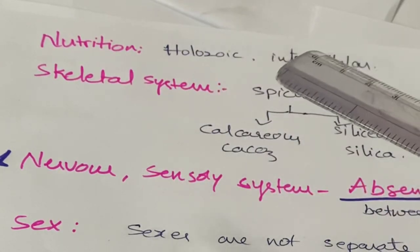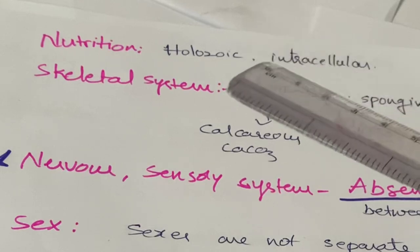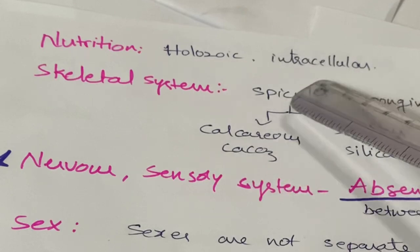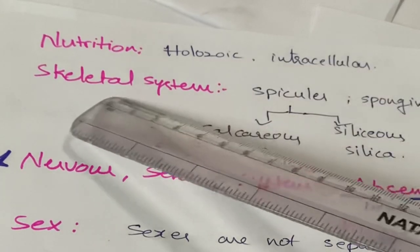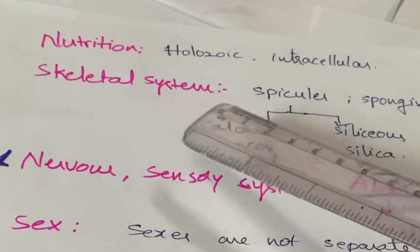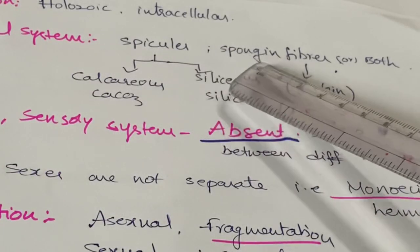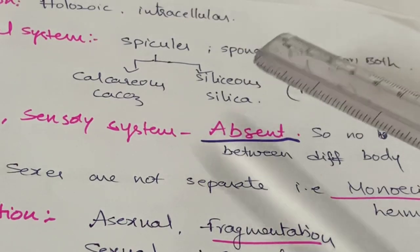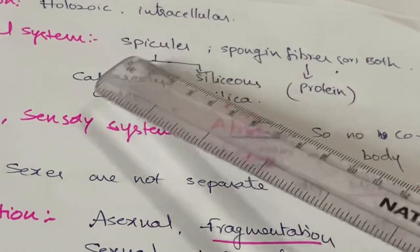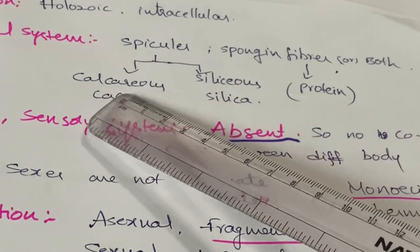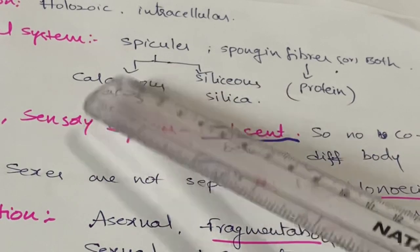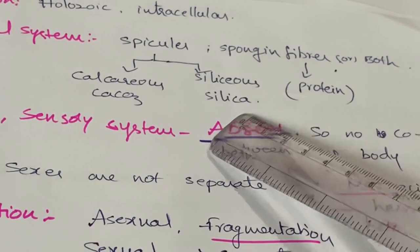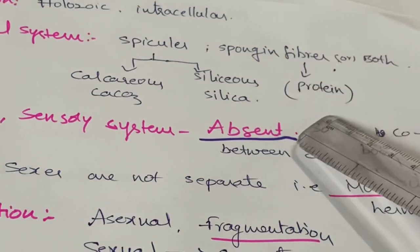The type of nutrition in Porifera is holozoic and intracellular nutrition — food is taken inside the body without modification and digested inside the cells, making it intracellular digestion. The skeletal system consists of spicules and spongin fibers; in some Porifera, both are present in the mesohyl region. Spicules are of two types: calcareous spicules and siliceous spicules.